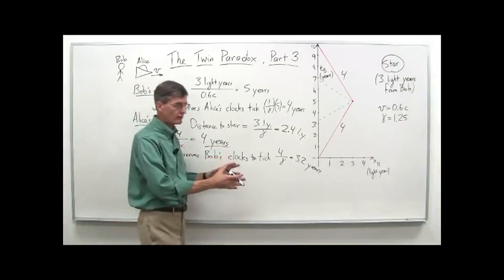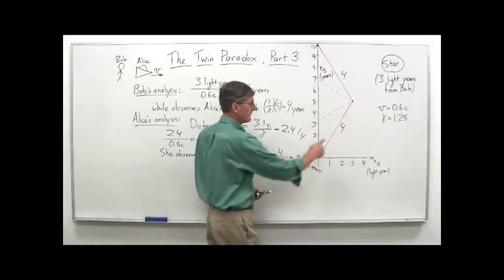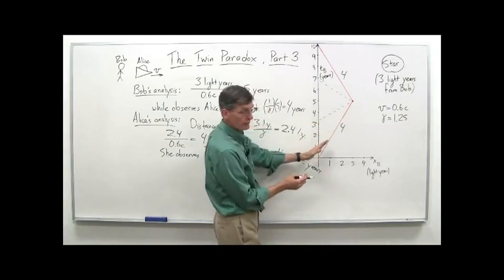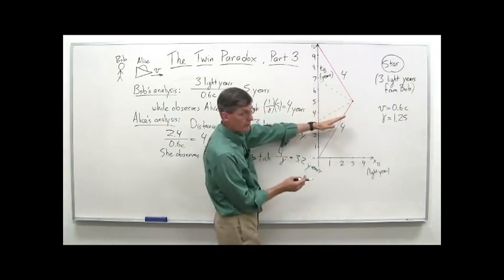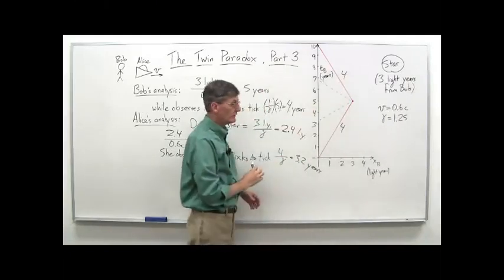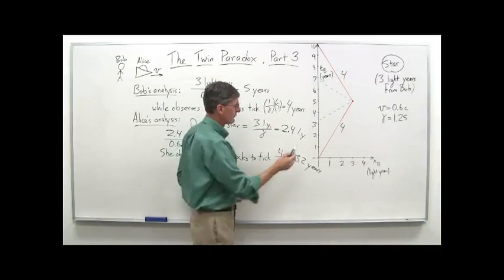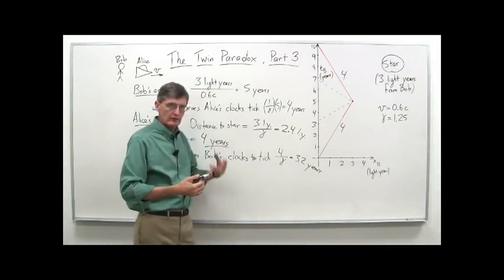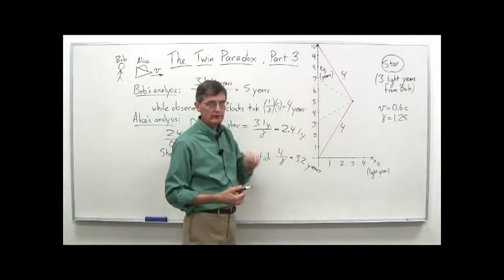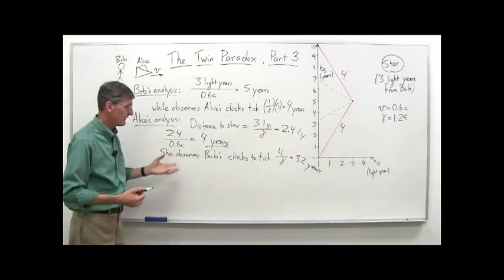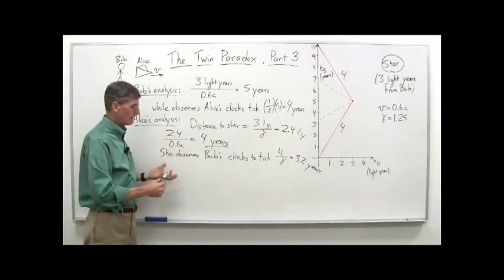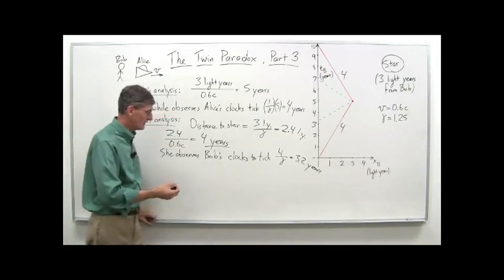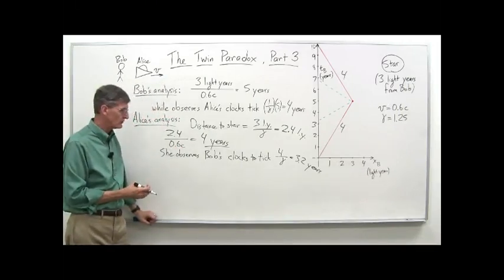We showed diagrammatically last time that this is an effect of her changing her frame of reference. When she turns around, she was in a frame of reference going this way with lines of simultaneity parallel like this. When she changes that frame of reference, the lines of simultaneity are different - it's a different frame of reference, and so there's a jump. It's not an instantaneous jump, but the jump occurs during her deceleration and acceleration phase. Bob's clocks tick ahead from 3.2 all the way to 6.8. We want to understand that now quantitatively using our special theory of relativity concepts and equations.